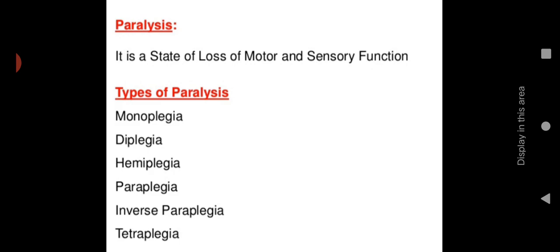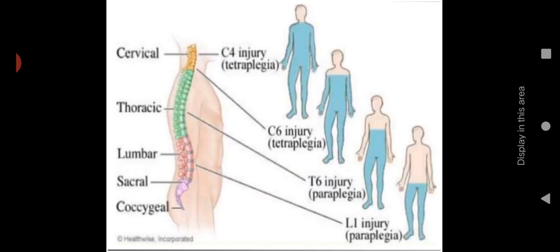Paralysis is a state of loss of motor and sensory function. Types include monoplegia (one extremity affected), diplegia (both), hemiplegia (half the body), paraplegia (both lower extremities), and tetraplegia (all four limbs). At the cervical level, tetraplegia occurs; at T6 paraplegia occurs with upper limbs functioning; at L1 or lumbar level, only the lower extremities are affected.